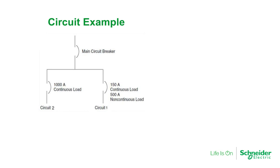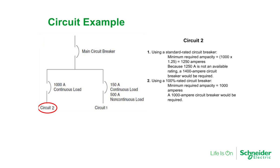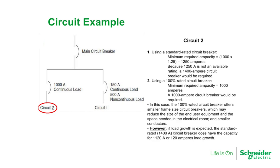Now let's take a look at circuit number 2. When using a standard rated circuit breaker in circuit number 2, the minimum required ampacity calculation would be 1000A times 1.25, yielding 1250A. Because 1250A is not an available rating, a 1400A circuit breaker would be required. Using a 100% rated circuit breaker, the minimum required ampacity would simply be 1000A, so a 1000A circuit breaker would be required. In this case, the 100% rated circuit breaker offers a smaller frame size circuit breaker, which may reduce the size of end user equipment and the space needed in the electrical room, plus smaller conductors.